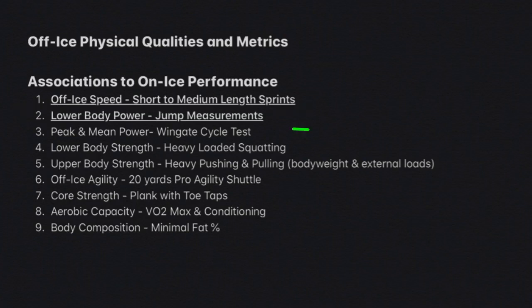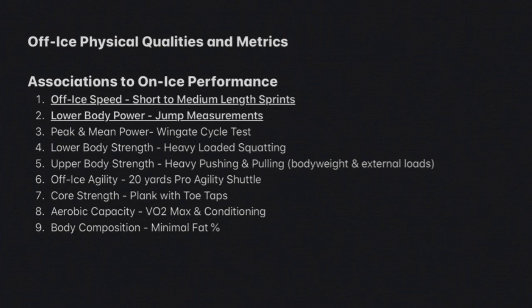Lower body power is number two — measured by vertical and broad jump. That's the second biggest indicator of on-ice performance. Knowing these top two right off the bat: does that match up with what you're doing off the ice right now? Are we focusing on mirror muscles, entirely on body composition, or going out for a couple-mile run? You really want to consider what you're doing.